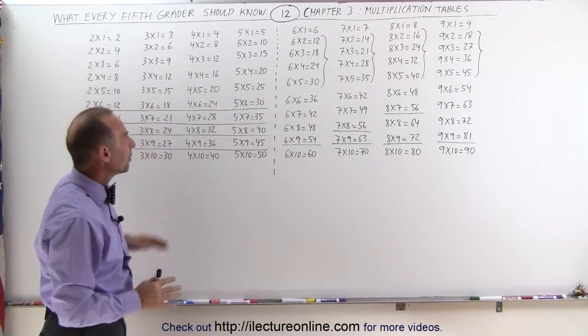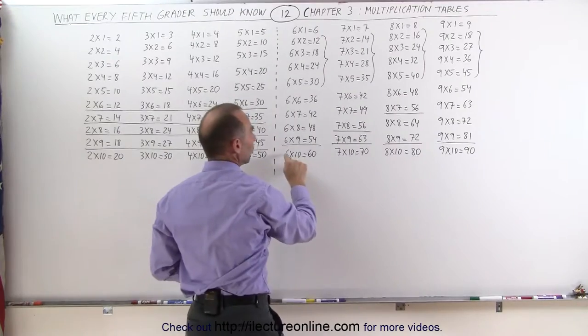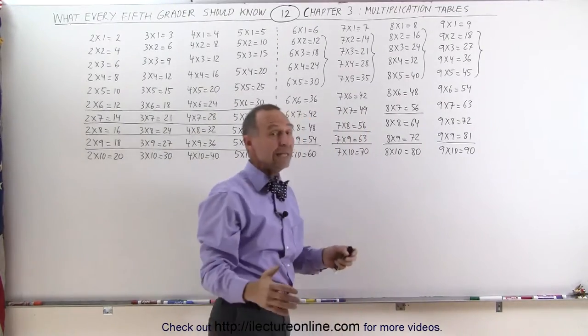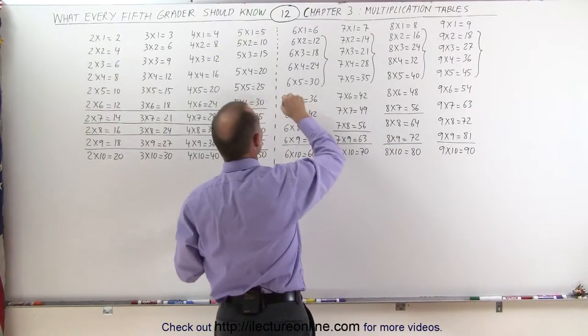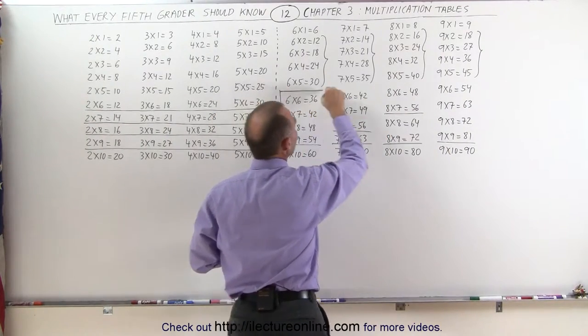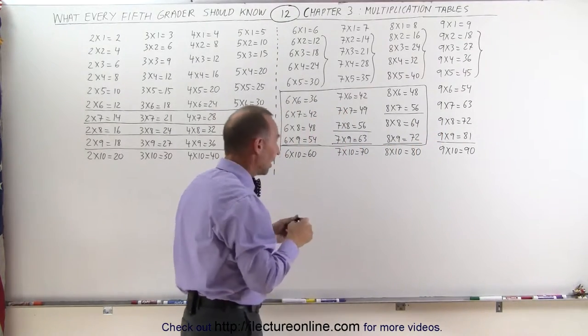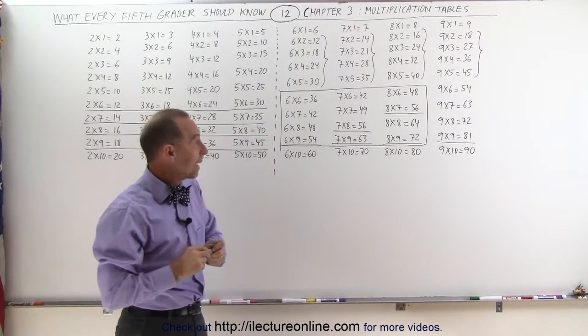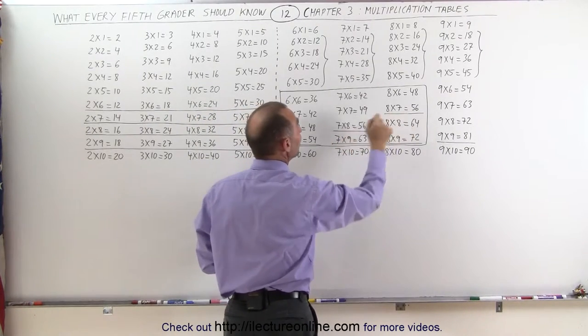these are fairly easy to remember. Those are simply duplicates of what we already learned over here. Multiplying times 10 is, of course, really easy. And I believe multiplying times 9 is easy, too. What it really comes down to, then, is memorizing these right in here. And that's a total of 16 numbers. And again, you'll begin to see patterns, such as 7 times 8 being 56, 8 times 7 being 56.